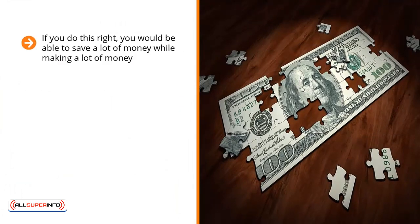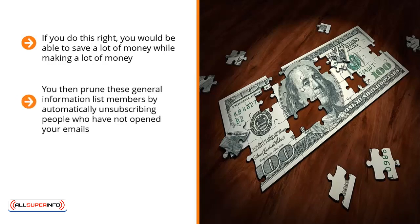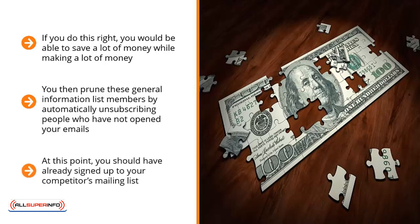How is this done? You can easily see through your email list management system which of your list members are not opening your emails. You then prune these general information list members by automatically unsubscribing people who have not opened your emails. Whoever is left still opens your emails, and you still have a chance of converting these people into buyers later. If done right, segmenting your list into a general information list and then a buyer's list not only saves you time, but it also can save you money. Be aware of your competitor's industry standard list segmentation.